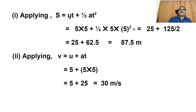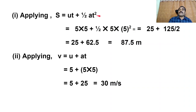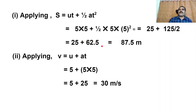S equals U into T plus half into A into T square. U is 5, T is 5, A is 5 meters per second square. S equals 5 into 5 plus half into 5 into 5 square. That is 25 plus half into 5 into 25 equals 25 plus 125 by 2 equals 25 plus 62.5 equals 87.5 meters.